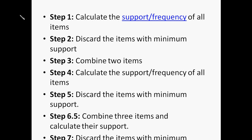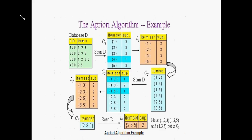We discard items that don't meet the total transaction threshold. Now we have a 1-item set and 2 items. Here we have a transaction database. The transaction IDs are 100, 200, 300, and 400. The items are: transaction 100 has items 1, 3, 4 — that is milk, butter, and item 4. Transaction 200 has 2, 3, 5. Transaction 300 has 1, 2, 3, 5. Transaction 400 has 2, 5.